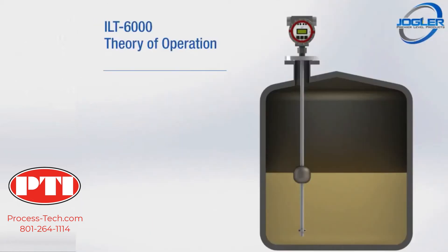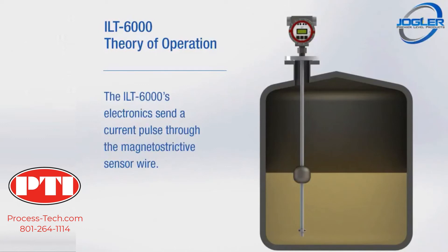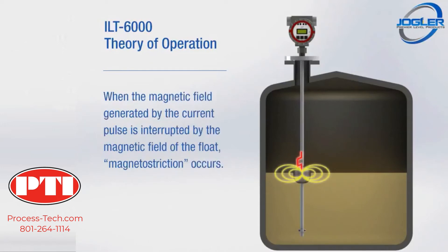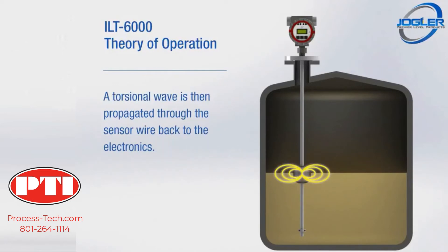The ILT-6000's electronics send a current pulse through the magnetostrictive sensor wire. When the magnetic field generated by the current pulse is interrupted by the magnetic field of the float, magnetostriction occurs. A torsional wave is then propagated through the sensor wire back to the electronics.